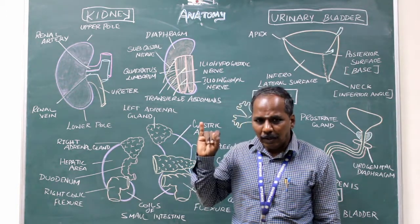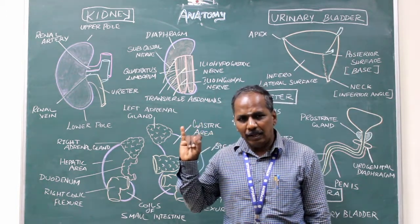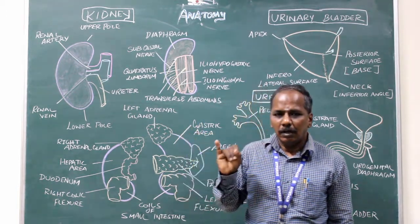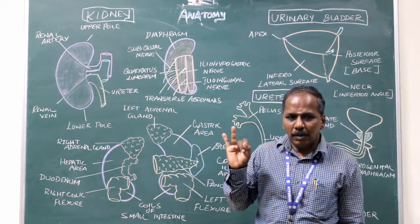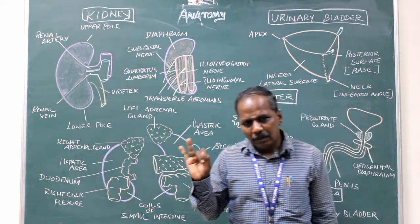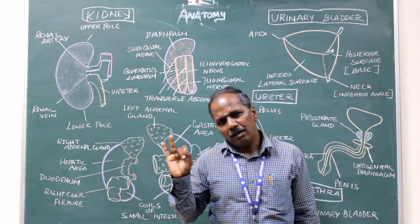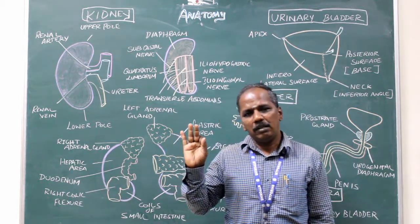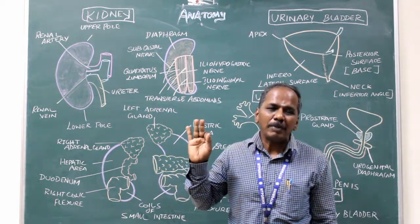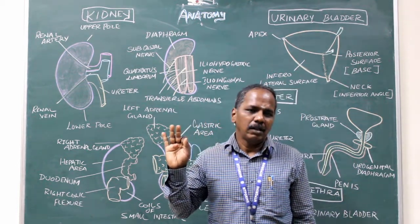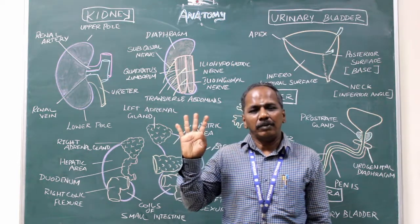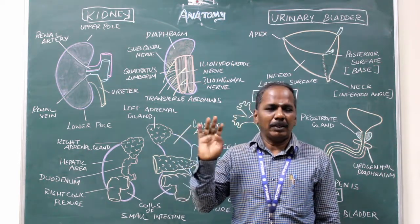Number one, the pair of kidneys. Number two, the pair of ureters. Number three, the urinary bladder. And number four, the urethra.